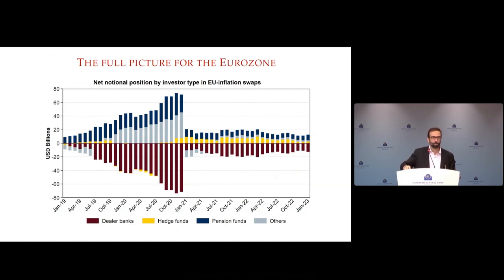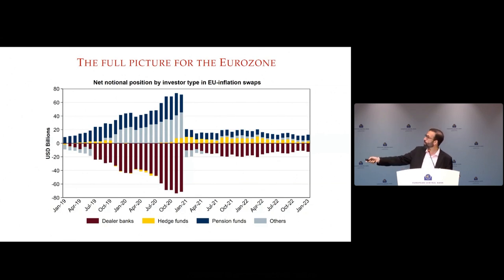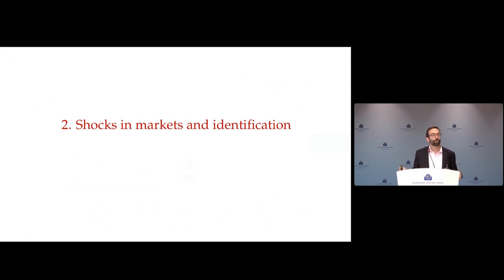This data is for the eurozone up to Brexit. London is the key market for buying and selling these swaps, and with Brexit the Bank of England's data becomes less complete. Some of the market has moved to Frankfurt. Before Brexit I had the universe; now I have a sample of the universe, which is another reason I focus on the UK. But for the euro area you see very similar segmentation in terms of dealer banks, pension funds, and hedge funds.